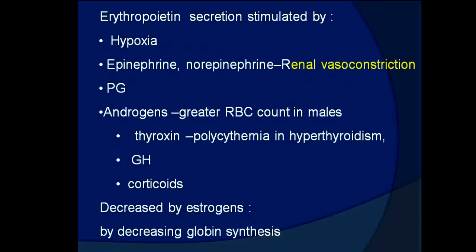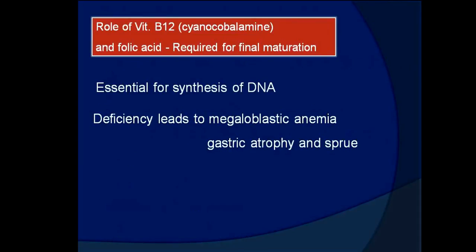Erythropoietin secretion is stimulated by hypoxia (major factor), epinephrine, norepinephrine, prostaglandins, and androgens. It is decreased by estrogens or by decreasing globin synthesis. Vitamin B12 and folic acid are required for final maturation of erythroid cells, as they are essential for DNA synthesis.